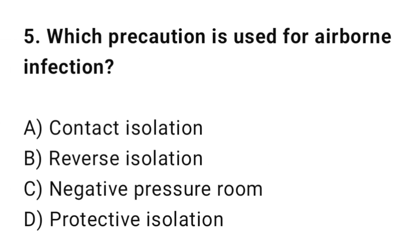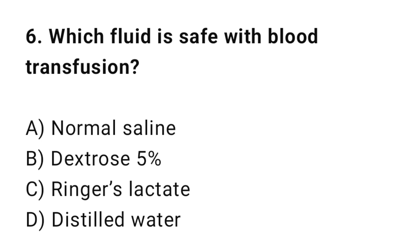Question 5: Which precaution is used for airborne infection? The correct option is C: Negative pressure room. Question 6: Which fluid is safe with blood transfusion? The correct option is A: Normal saline.